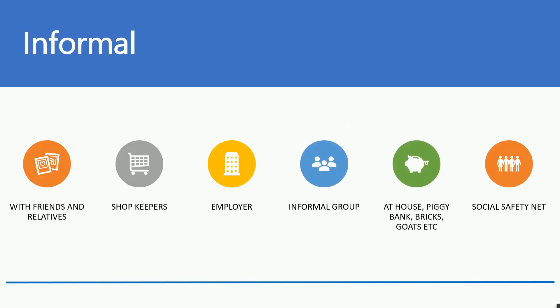The first one is friends and relatives. These people actually trust their friends and relatives more than any formal ecosystem. They also want liquidity in their savings or deposit products, so in case they need money they can ask from their relatives and friends.